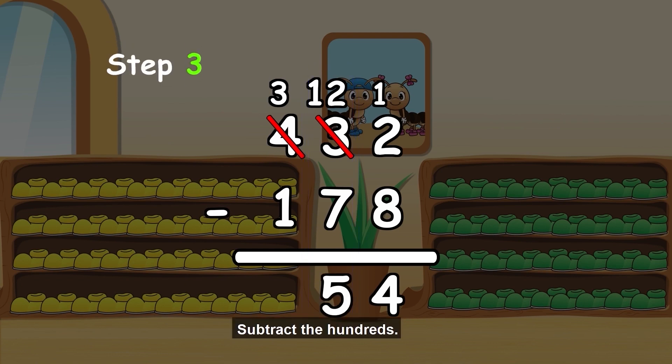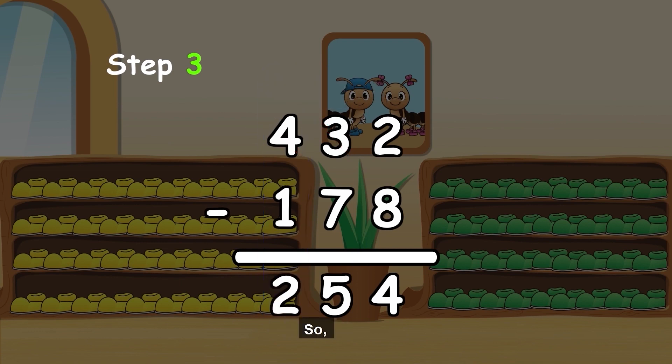Step 3. Subtract the hundreds. 3 minus 1 equals 2. So, 432 minus 178 equals 254. Great!